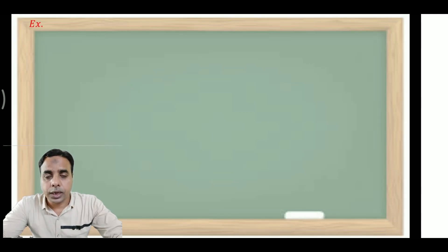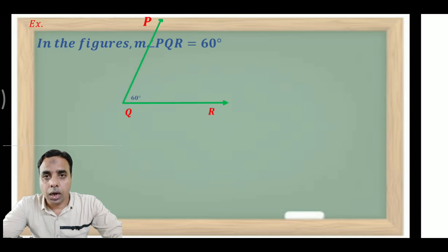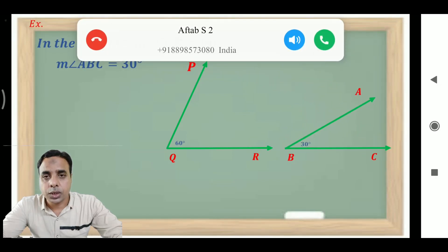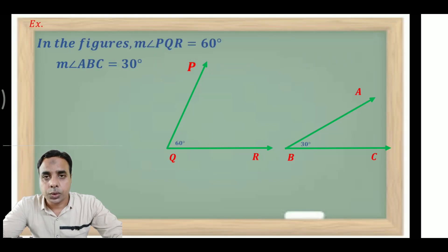Here we take an example. In this example we can see in the figure: measurement of angle PQR is equal to 60 degrees, and measurement of angle ABC is equal to 30 degrees. So here are the two angles on your screen — those angles are of 30 degrees and 60 degrees.